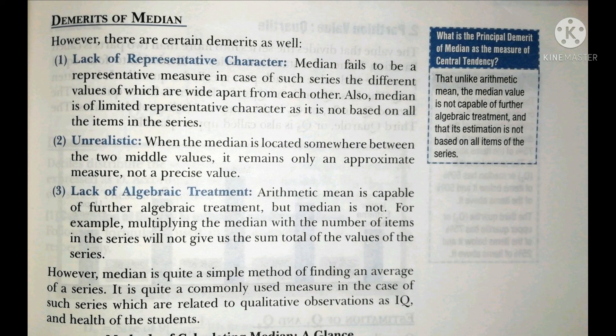Second demerit is that it is unrealistic. When the median is located somewhere between two middle values, it remains only an approximate measure, not a precise value. When there are two middle values, the median is only an approximate measure, not a particular definite value.